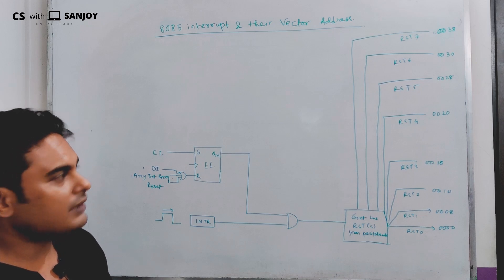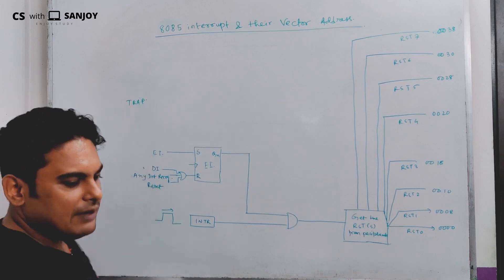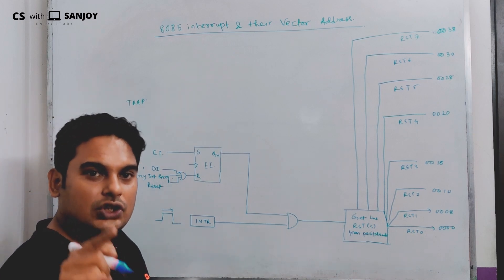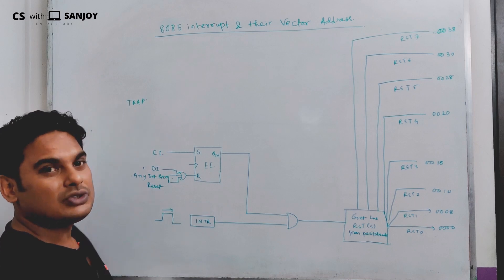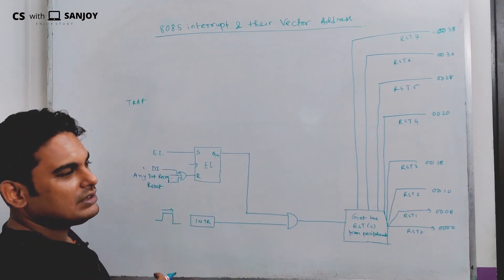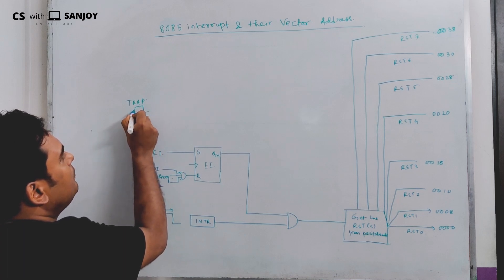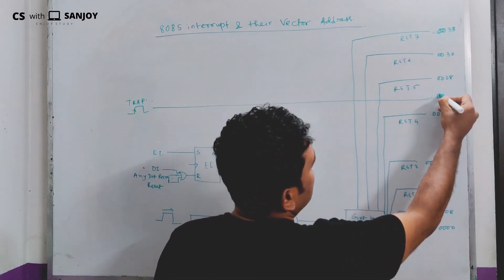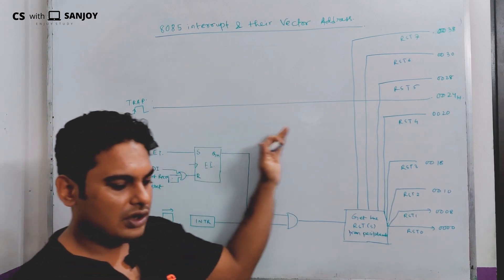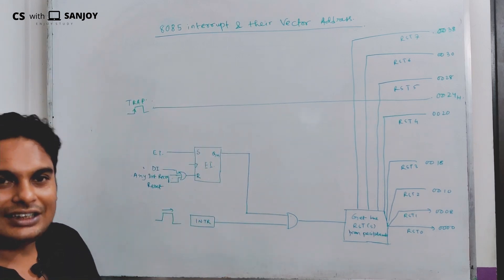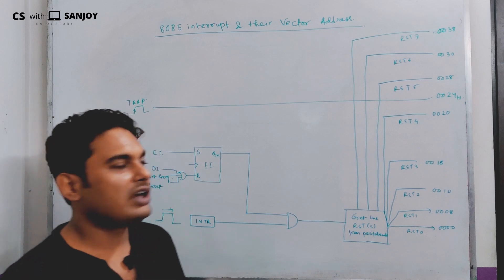This is what we call hardware interrupts. In general, there is an interrupt called the TRAP. What is trap? Trap is a high-priority non-maskable interrupt. When the trap occurs, the trap has to execute. That is, the trap ISR location is 0024H. There is no masking which can block trap. Trap will execute because it has the highest priority and is a non-maskable interrupt. No one can block trap.